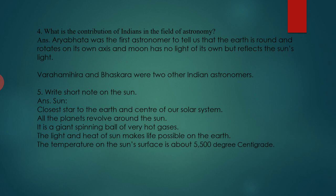Question 5: Write a short note on the Sun. Sun is the closest star to the Earth and center of our solar system. All the planets revolve around the Sun. It is a giant spinning ball of very hot gases. The light and heat of the Sun makes life possible on the Earth. The temperature on the Sun's surface is about 5,500 degrees centigrade.